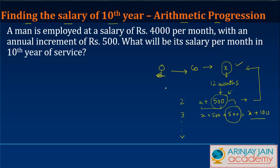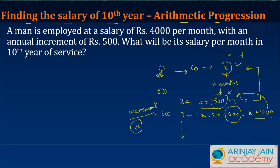The difference between the salary in year 2 and year 1 is 500. Similarly, the difference between year 3 and year 2 is also 500 — (X + 1000) minus (X + 500) equals 500. This increment is effectively the common difference in the arithmetic progression, and X, the starting salary, is the first term. Knowing the first term and common difference, we can find the salary in any year — 10th, 15th, or 20th.